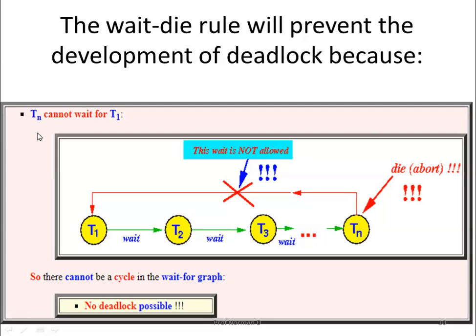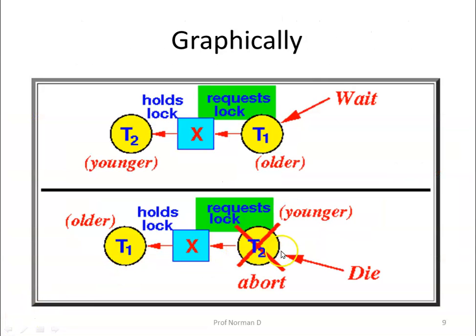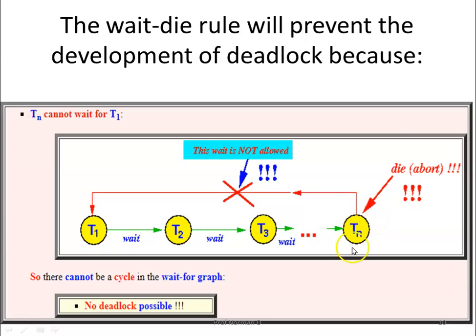One thing to keep in mind is that there is no deadlock possible in the Wait-Die scheme. A younger transaction requesting a lock on a data item held by an older transaction will be aborted, which releases the potential deadlock scenario. So there is no wait allowed for a younger transaction in this mechanism, preventing any cycle from forming.